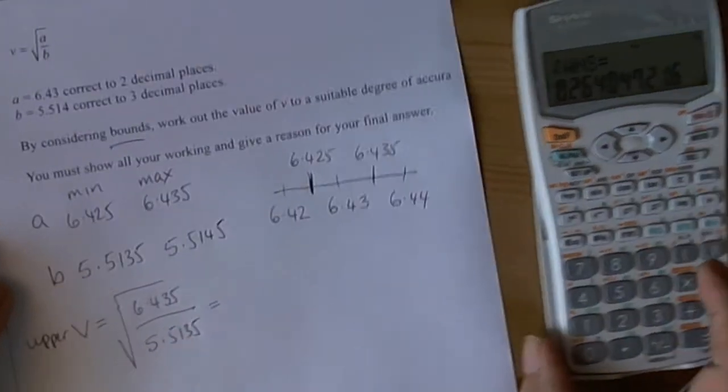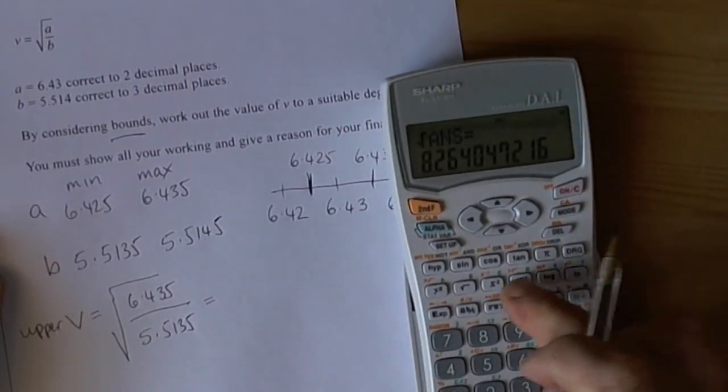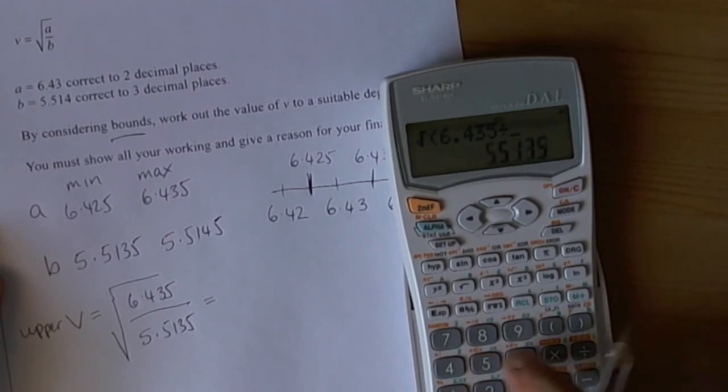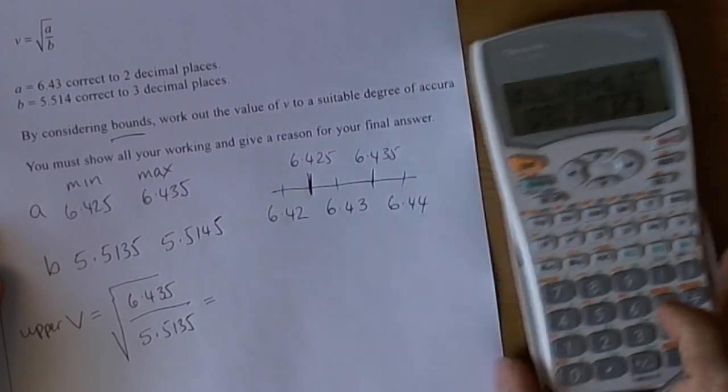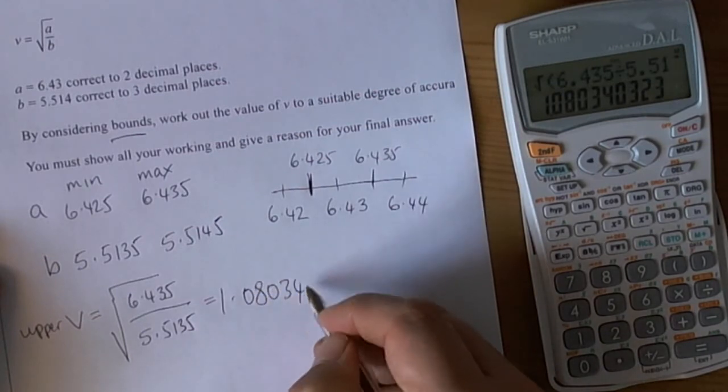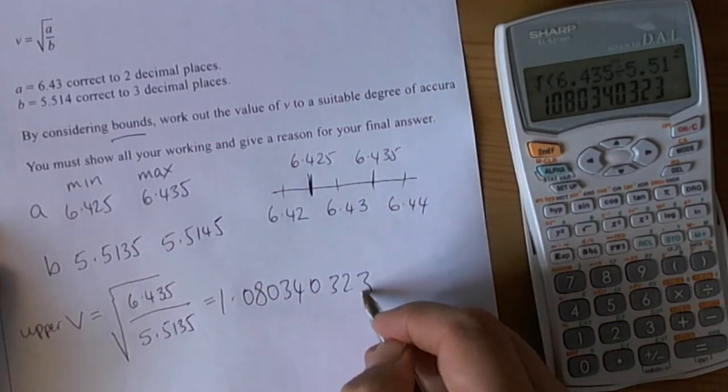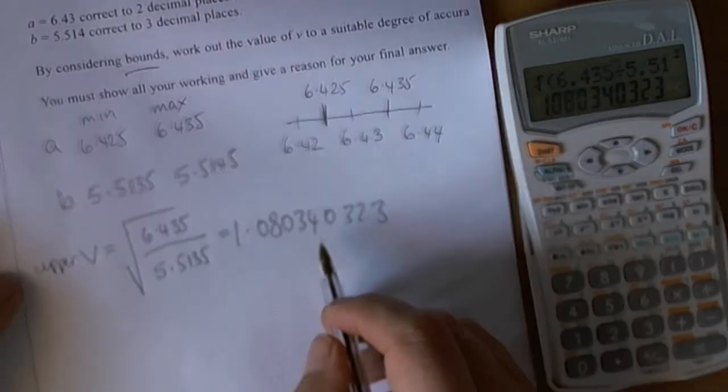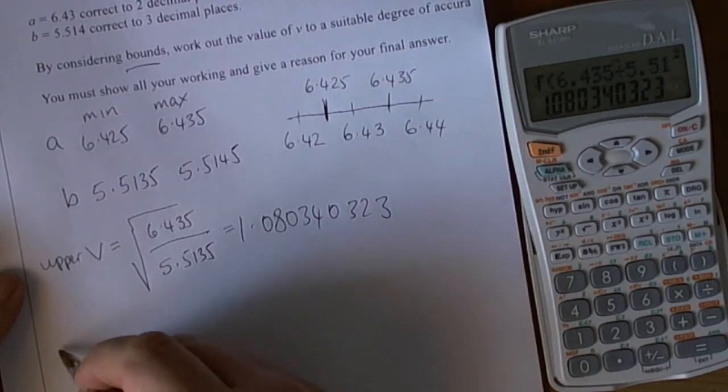We do that on our calculator. So we do square root bracket 6.435 divide by 5.5135 close bracket equals, and we get an answer of 1.080340323. Again, like a lot of calculator questions, do not round until you get to the final answer. So that would be our upper V value.